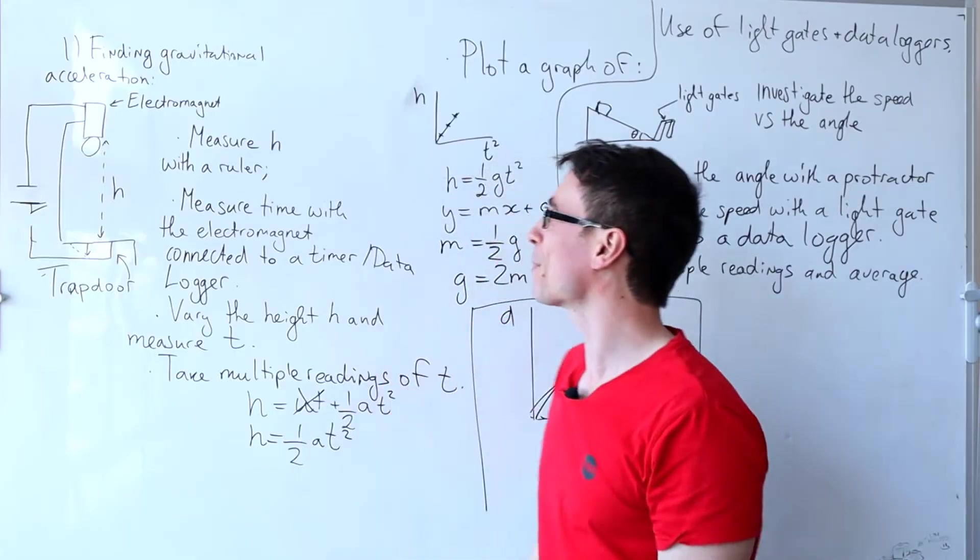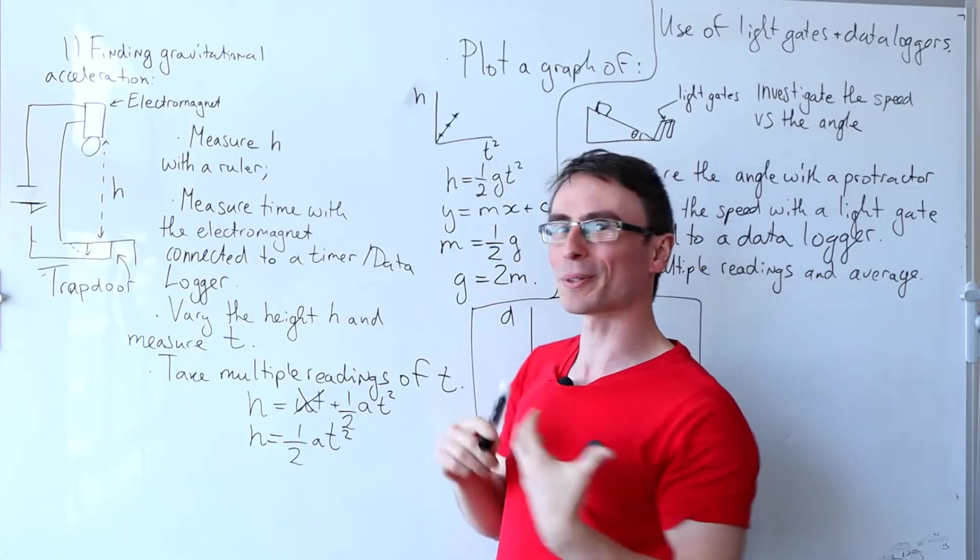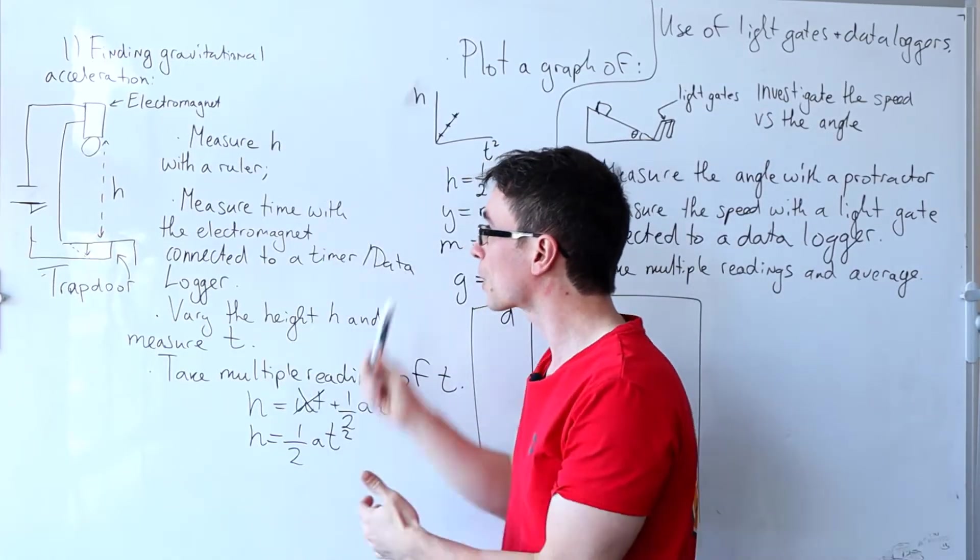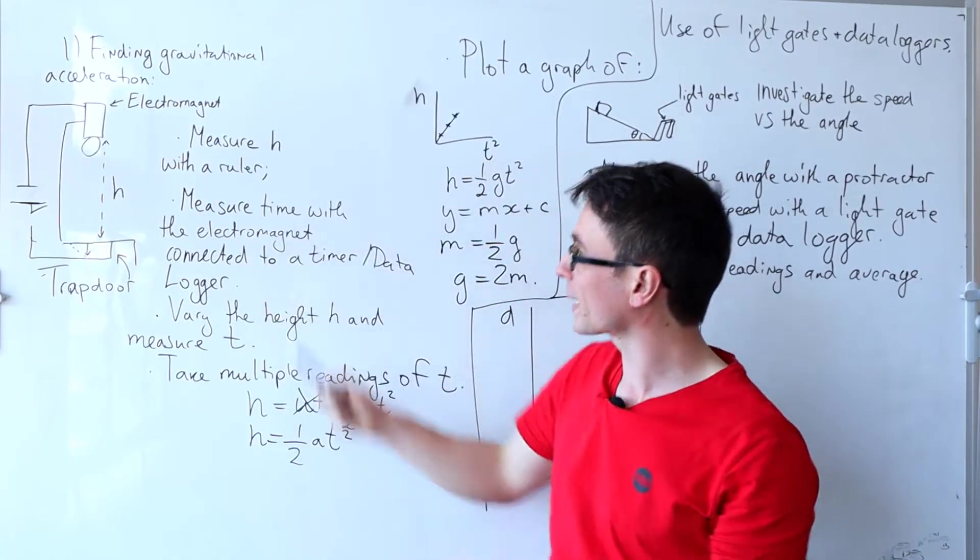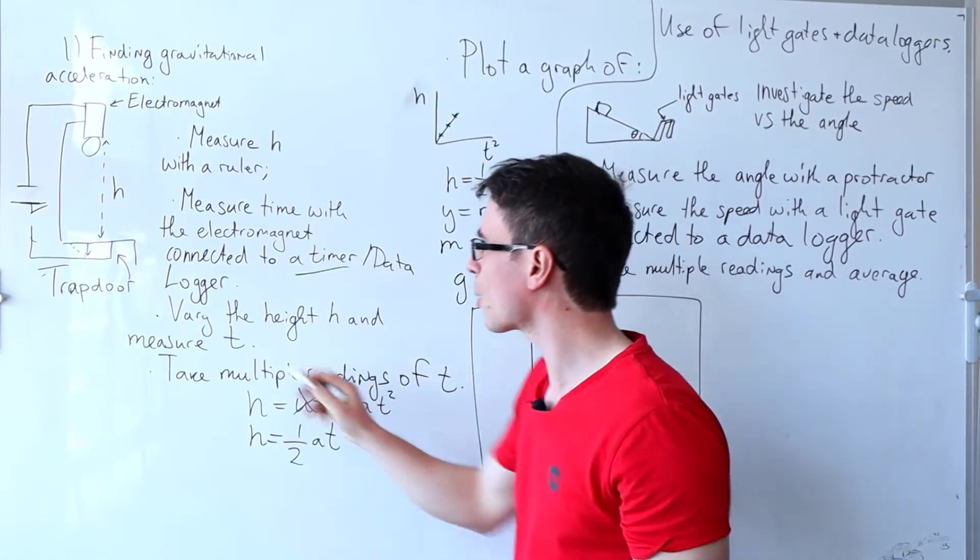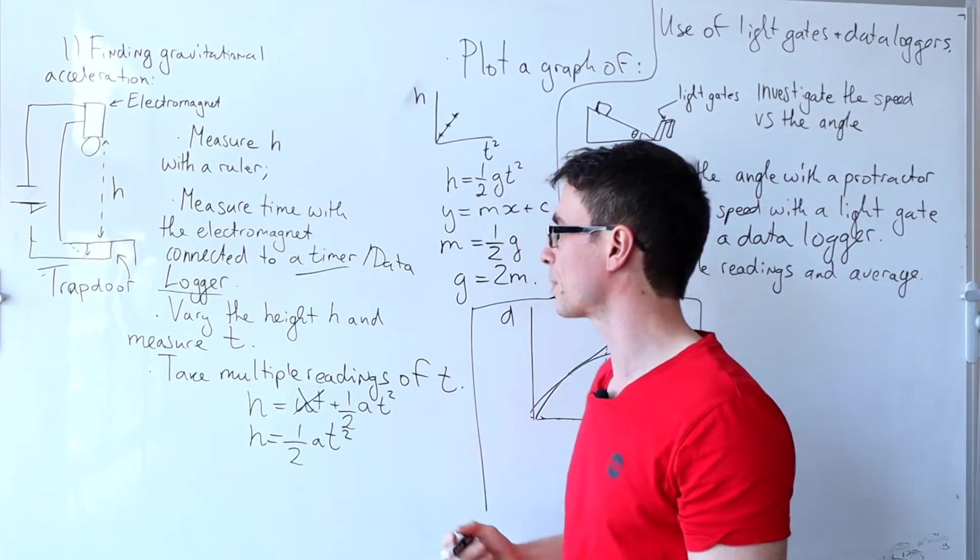As always with experiments first of all we need to write what we're going to be measuring. So we're going to measure H with a ruler. We'll be measuring the time with the electromagnet connected to a timer. Typically also on mark schemes data logger is also accepted.